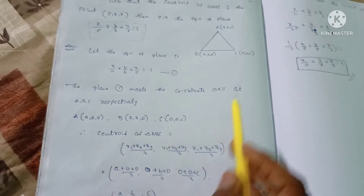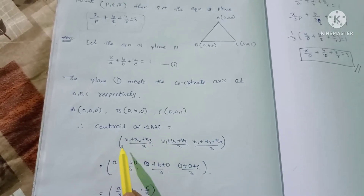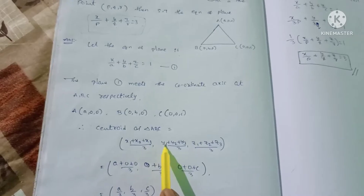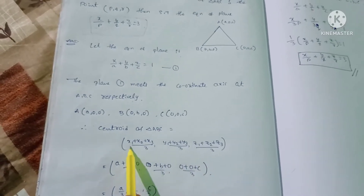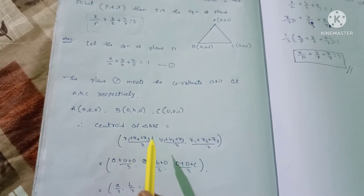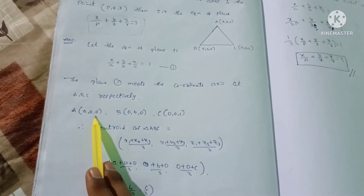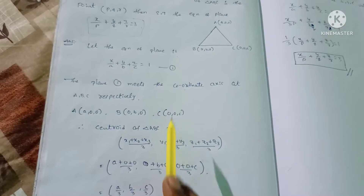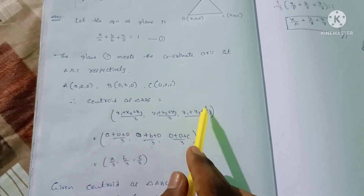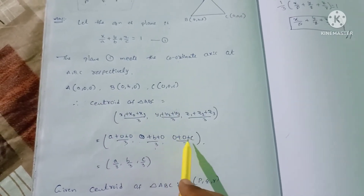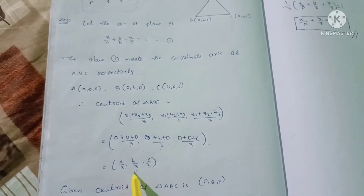Let's solve for the centroid of triangle ABC. The formula for the centroid is: ((x1+x2+x3)/3, (y1+y2+y3)/3, (z1+z2+z3)/3). Here x1=a, x2=0, x3=0; y1=0, y2=b, y3=0; z1=0, z2=0, z3=c. So the centroid is (a/3, b/3, c/3).